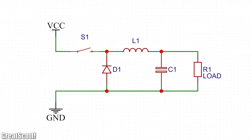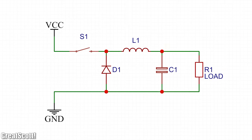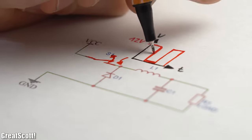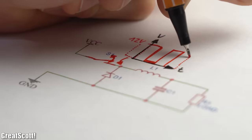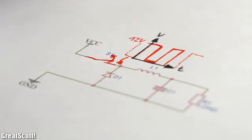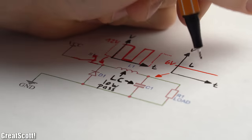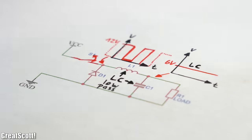But anyway, next we need to understand how the circuit works. If we simplify it as much as possible, then we could say that the switch creates a PWM voltage with a high frequency that gets smoothed out and thus lowered by an LC low pass filter.